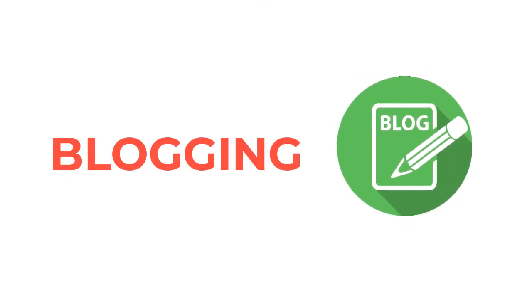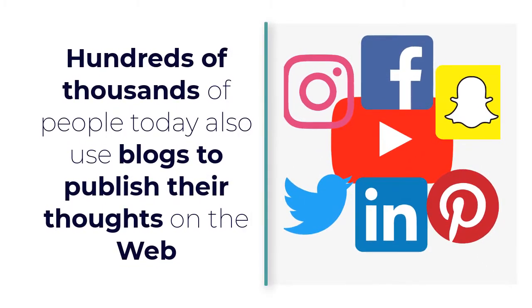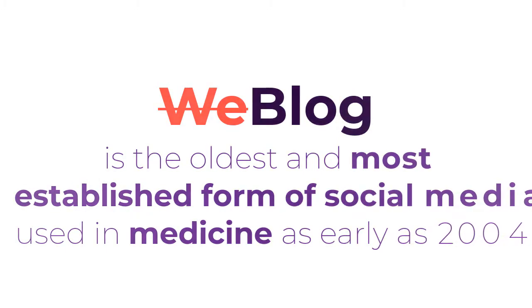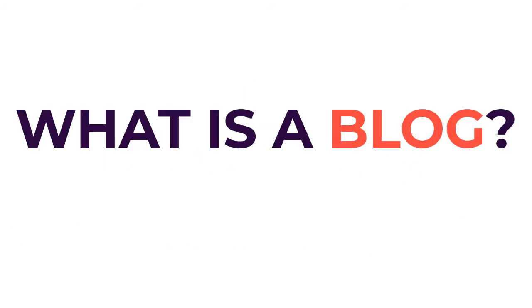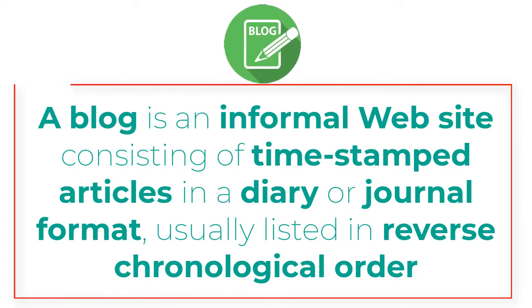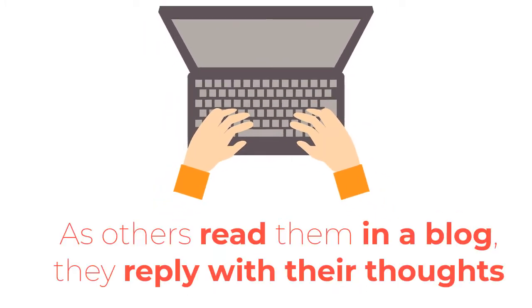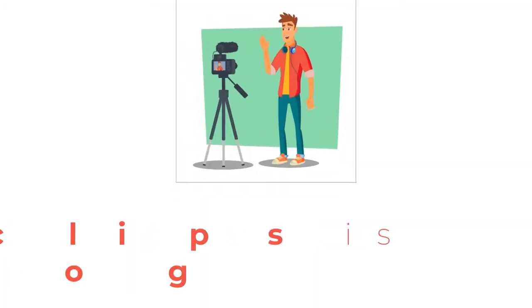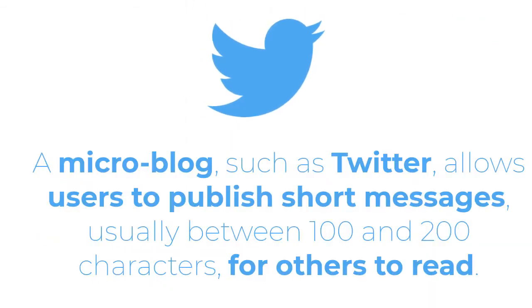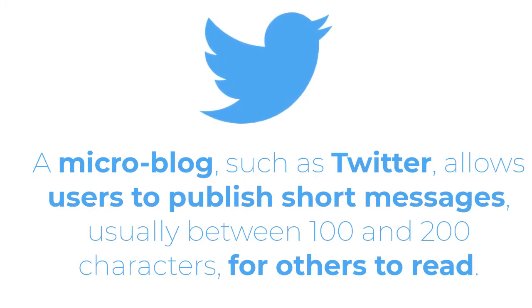It is said that the concept of social media started with blogging. Today, hundreds of thousands of people use blogs to publish their thoughts on the web. The blog, a term formed by truncating 'web blog,' is the oldest and most established form of social media, used in medicine as early as 2004. A blog is an informal website consisting of timestamped articles in a diary or journal format, usually listed in reverse chronological order. A blog that contains video clips is called a video blog or vlog. A microblog such as Twitter allows users to publish short messages usually between 100 to 200 characters for others to read.